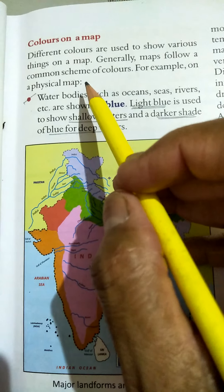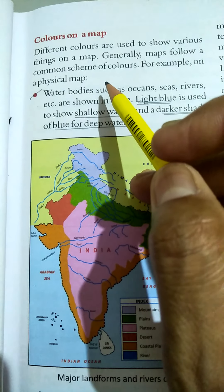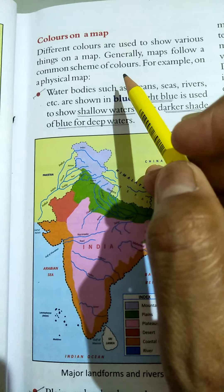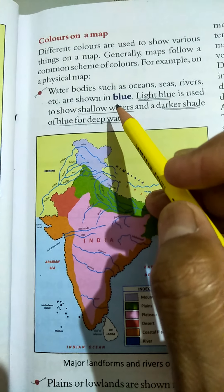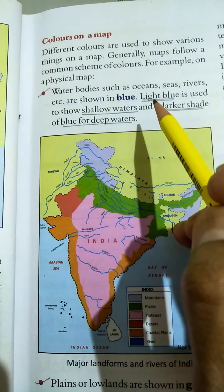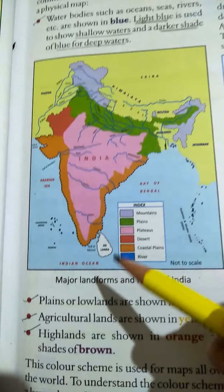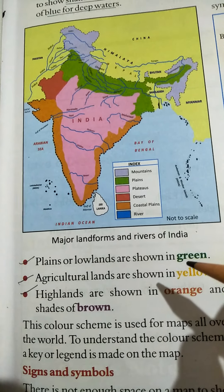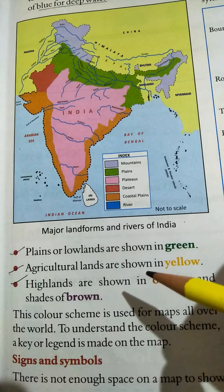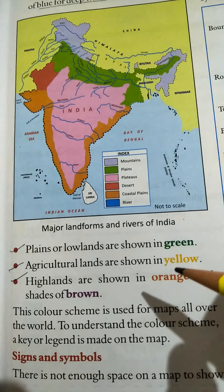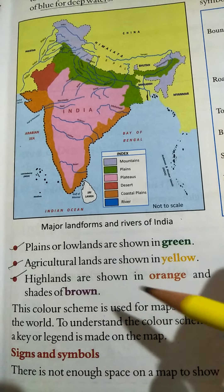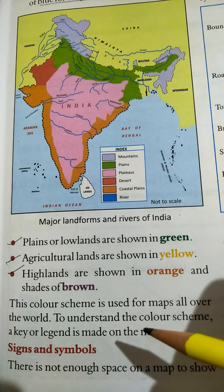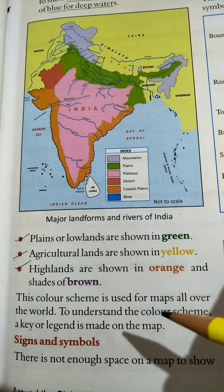Different colors are used on a map to show various things. Water bodies are shown in blue. Plains or lowlands are shown in green. Agricultural lands are shown in yellow. Highlands are shown in orange and shades of brown. So different colors are used on a map to show different things.